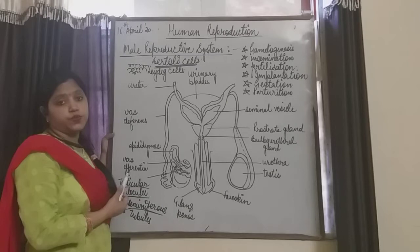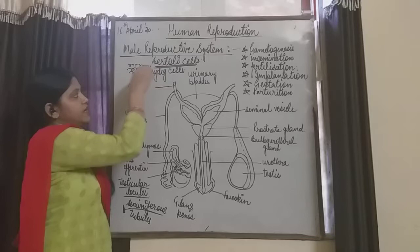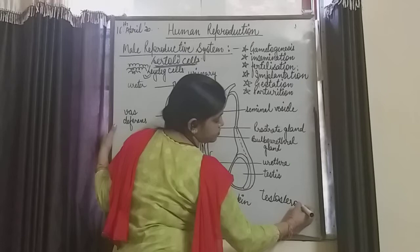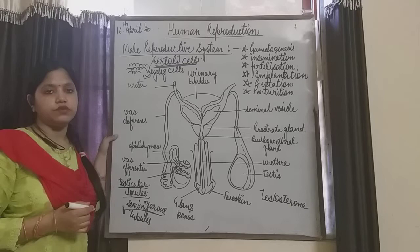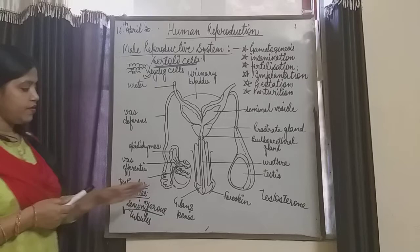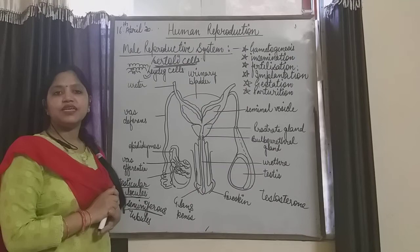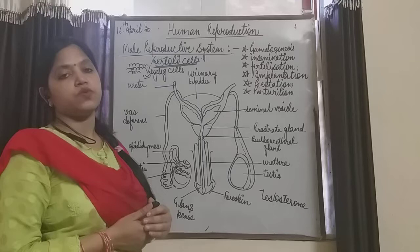Outside the seminiferous tubules, the interstitial fluid is present, and in that fluid the Leydig cells are present. The function of Leydig cells is to secrete the hormone testosterone, also known as androgens — the male sex hormones. So: Sertoli cells nourish the sperms, and Leydig cells secrete the sex hormones which control all the secondary sexual characters in the human male.